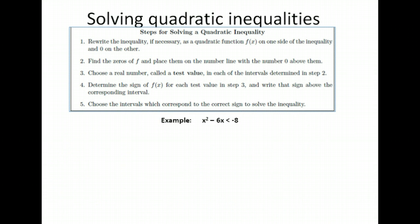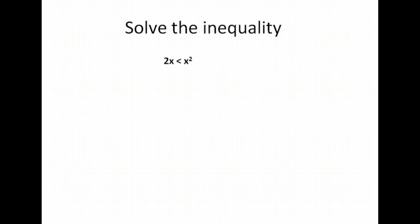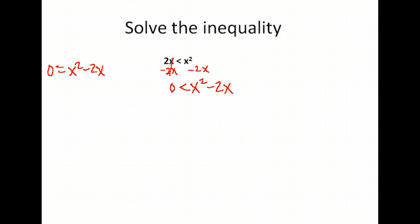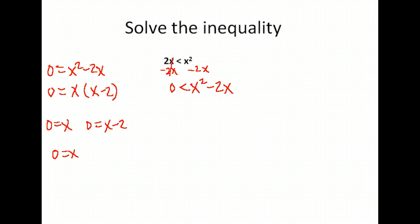You can write that answer in interval notation or with inequality signs — but get used to interval notation because it's going to stick around. For the next example, our first job is to get zero on one side and everything else on the other, so I'm going to subtract 2x from both sides. For step 2, we set the expression equal to zero and find the zeros by solving. It still factors: I can pull an x out and get x(x minus 2). Setting each factor equal to zero, I solve and get x = 0 and x = 2.